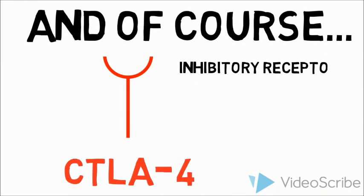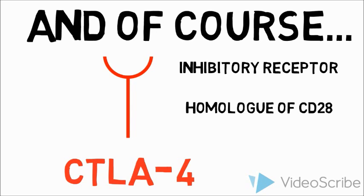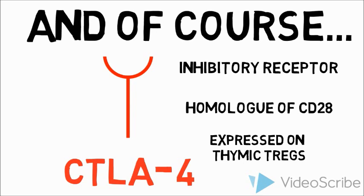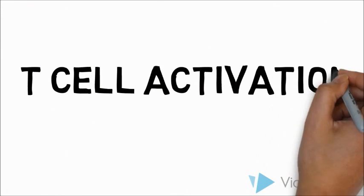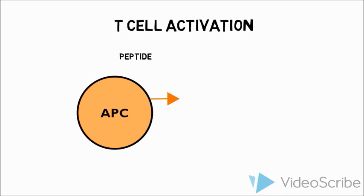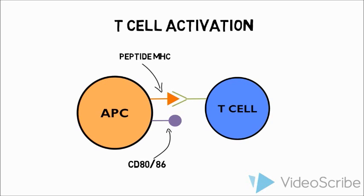CTLA-4 is an inhibitory receptor and a homologue of CD28. It is also expressed on thymic T regulatory cells. To begin with, let's look at how a T-cell is activated. Two signals are required: peptide MHC and CD80/86 on the antigen presenting cell must bind with the TCR and CD28 on the T-cell respectively. This leads to T-cell activation.